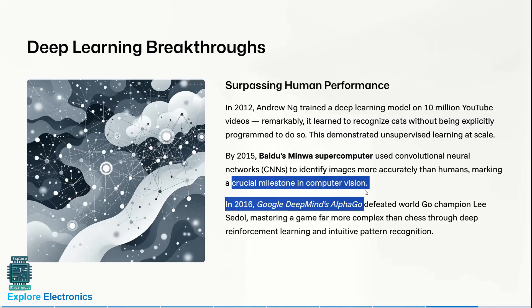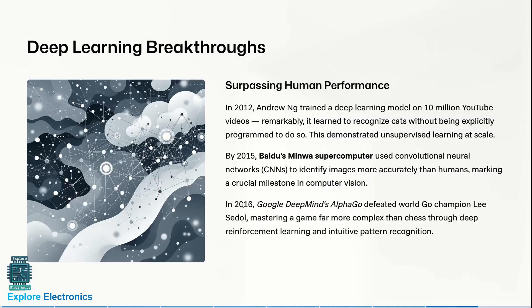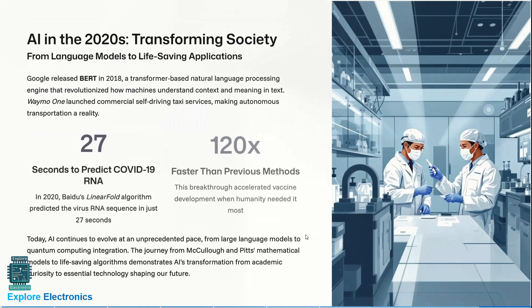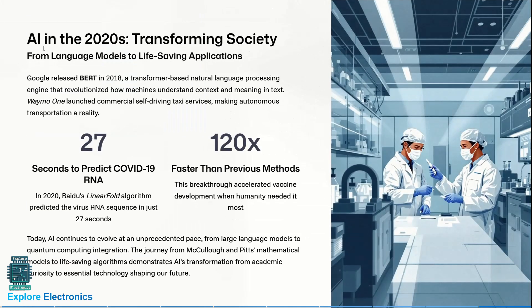In 2015, Baidu's supercomputer used convolutional neural networks (CNNs) to identify images more accurately than humans, marking a crucial milestone in computer vision. In 2016, Google DeepMind's AlphaGo defeated the world Go champion, mastering a game far more complex than chess through deep reinforcement learning and intuitive pattern recognition.